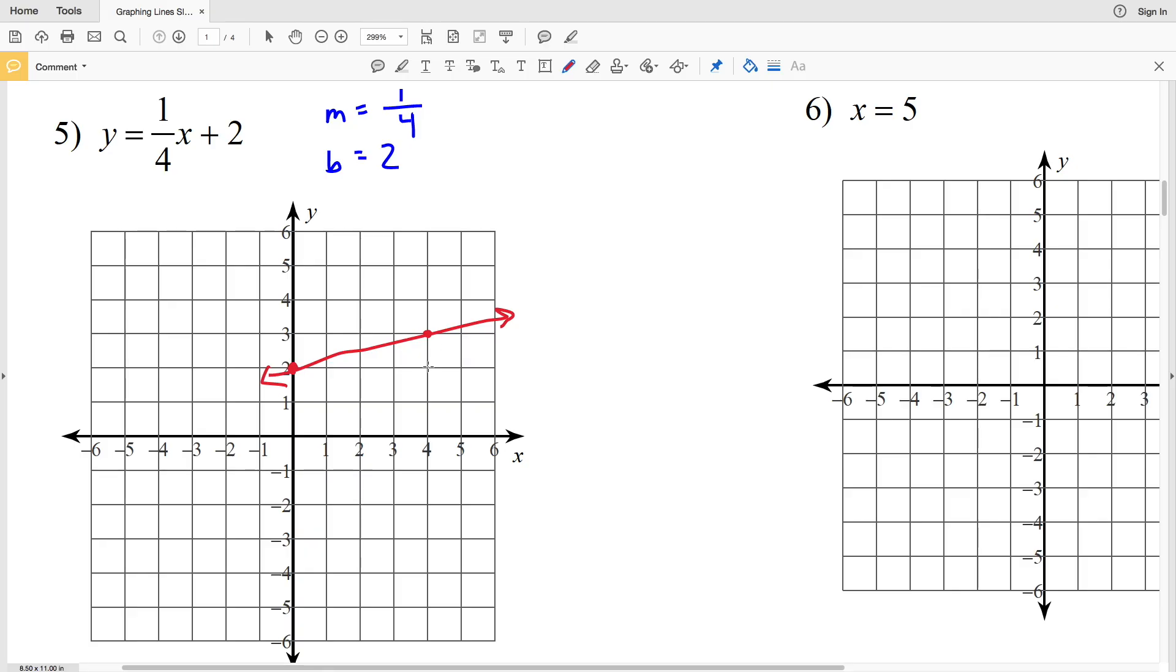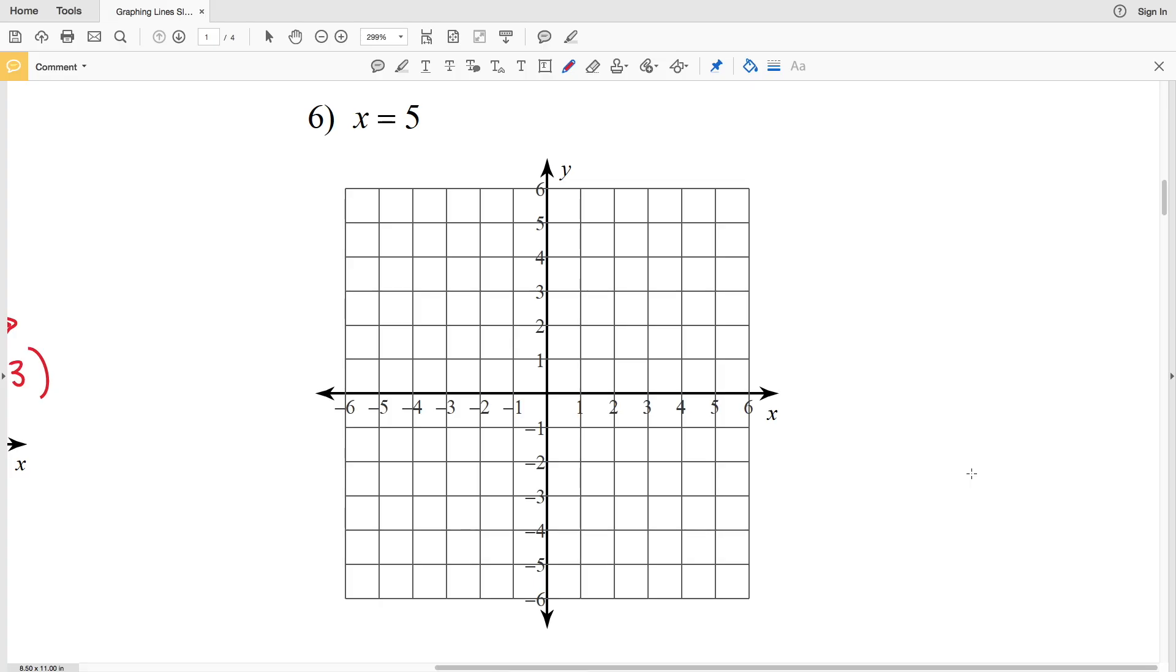Go ahead and feel free to double check and enter in that coordinate 4 comma 3. Go ahead and enter in 4 for x and see if you get 3 for your y value. If so, we knew that we drew our line correctly. Let's go ahead and finish up the first page of this worksheet in this video, and in the next video I'll do the second page.